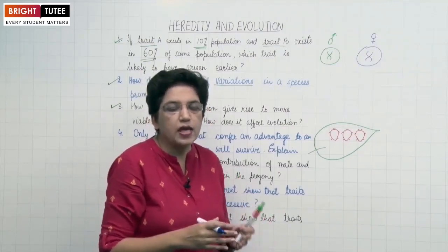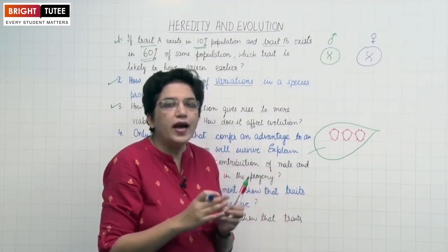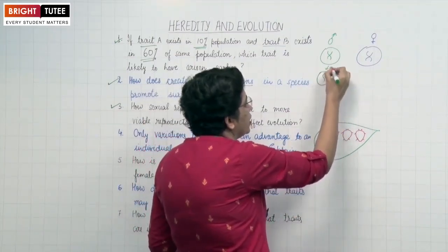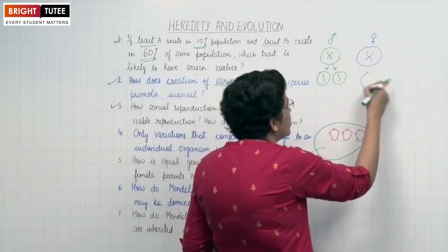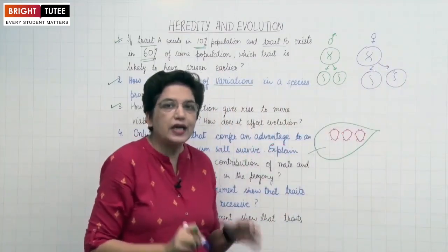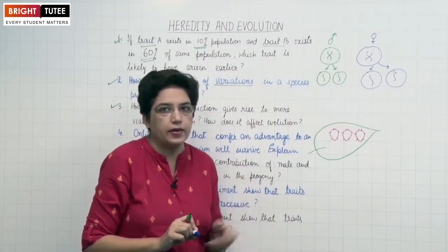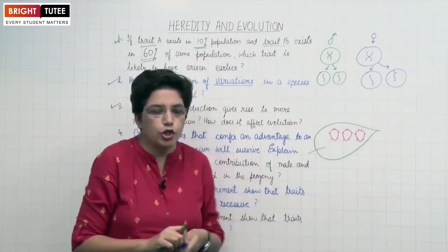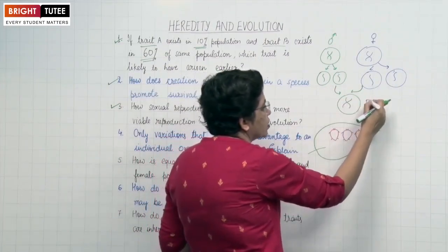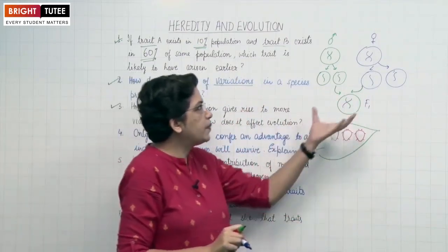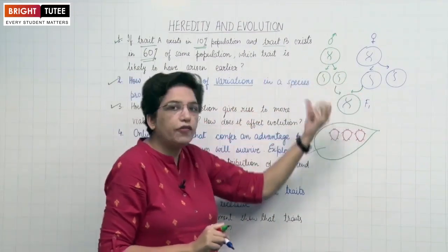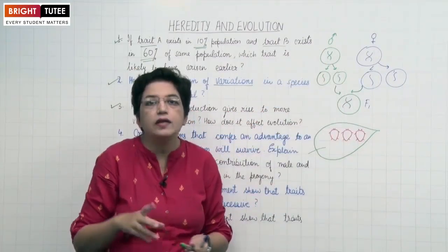In the process of meiosis, the cell divides into two and each cell contains half the number of chromosomes. These special cells which contain half the number of chromosomes are called gametes. One male gamete and one female gamete fuse together to form the new generation, called F1 progeny — first generation. Due to this new combination from the parents, there are more variations.